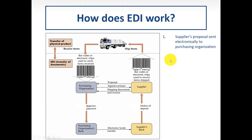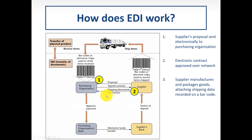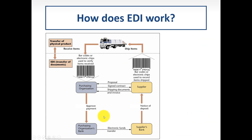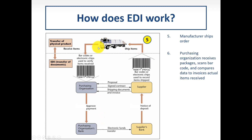With an improved system, step one: a supplier's proposal is sent electronically to the purchasing organization. Step two: an electronic contract is approved over the network. Step three: the supplier manufactures and packages goods, attaching shipping data recorded on a barcode. Quantities and prices enter into the system and flow to the invoicing program. Invoices are transmitted to the purchasing organization.